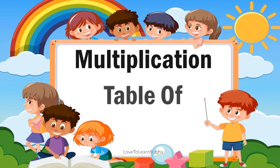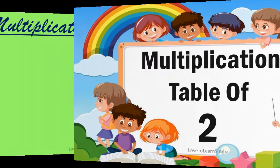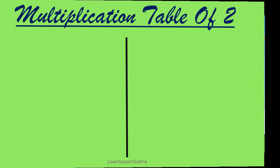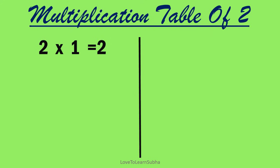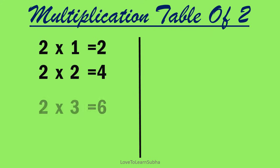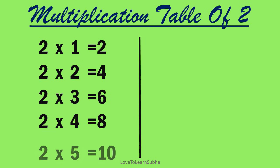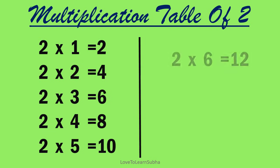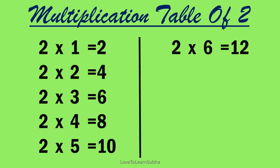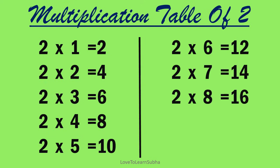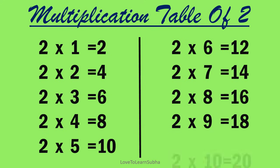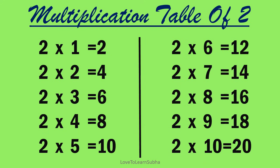Multiplication table of 2. 2 ones are 2, 2 twos are 4, 2 threes are 6, 2 fours are 8, 2 fives are 10, 2 sixes are 12, 2 sevens are 14, 2 eights are 16, 2 nines are 18, 2 tens are 20.